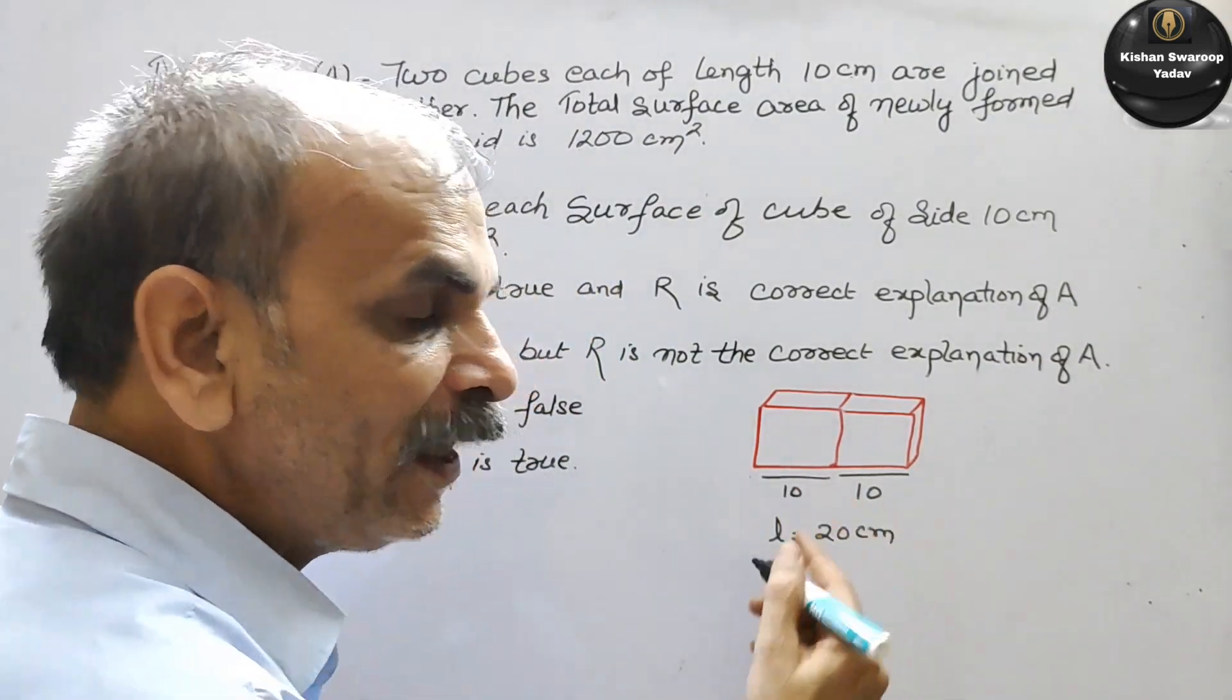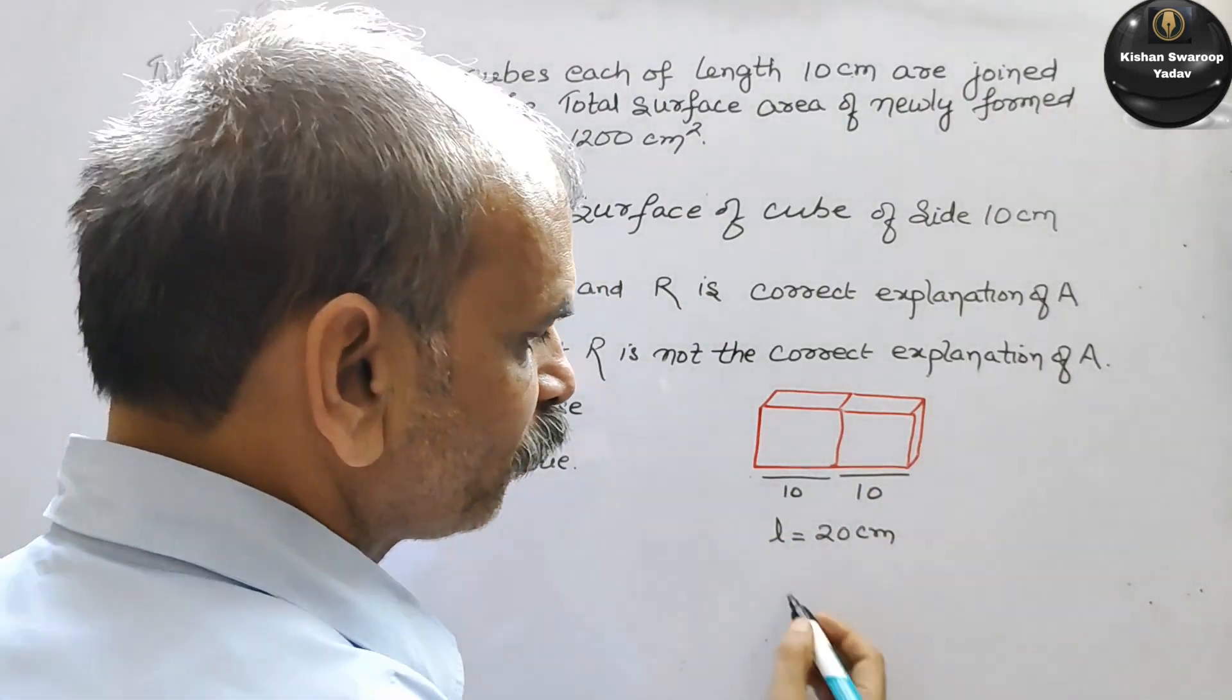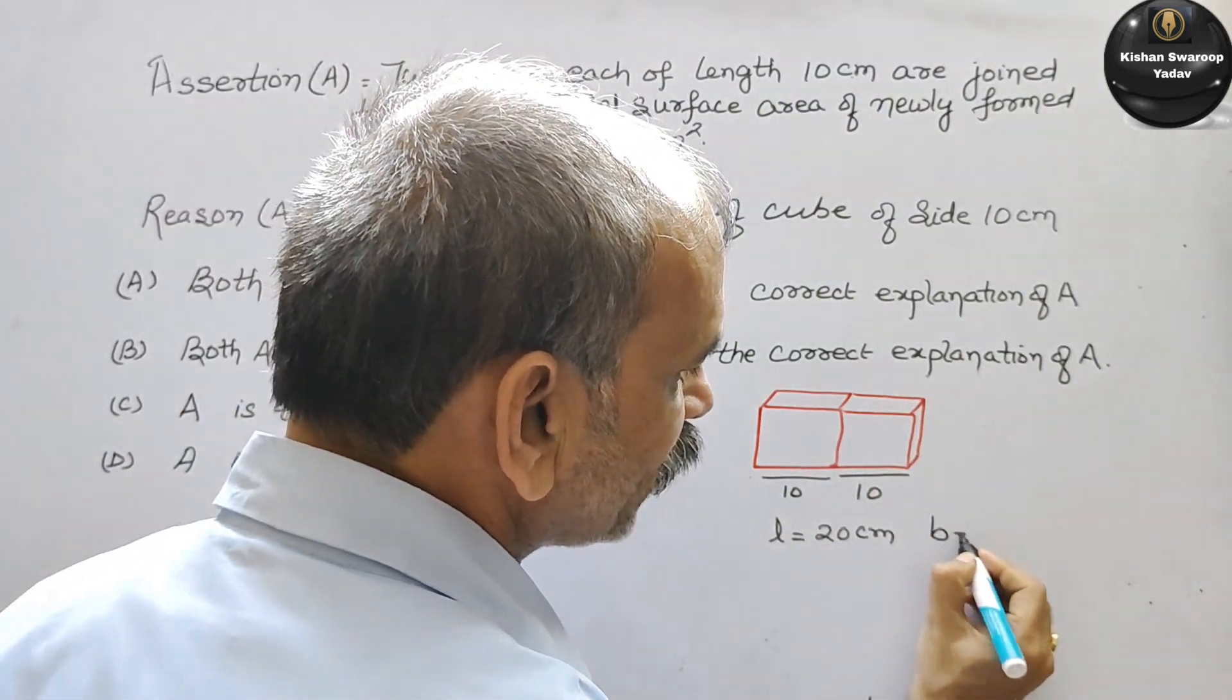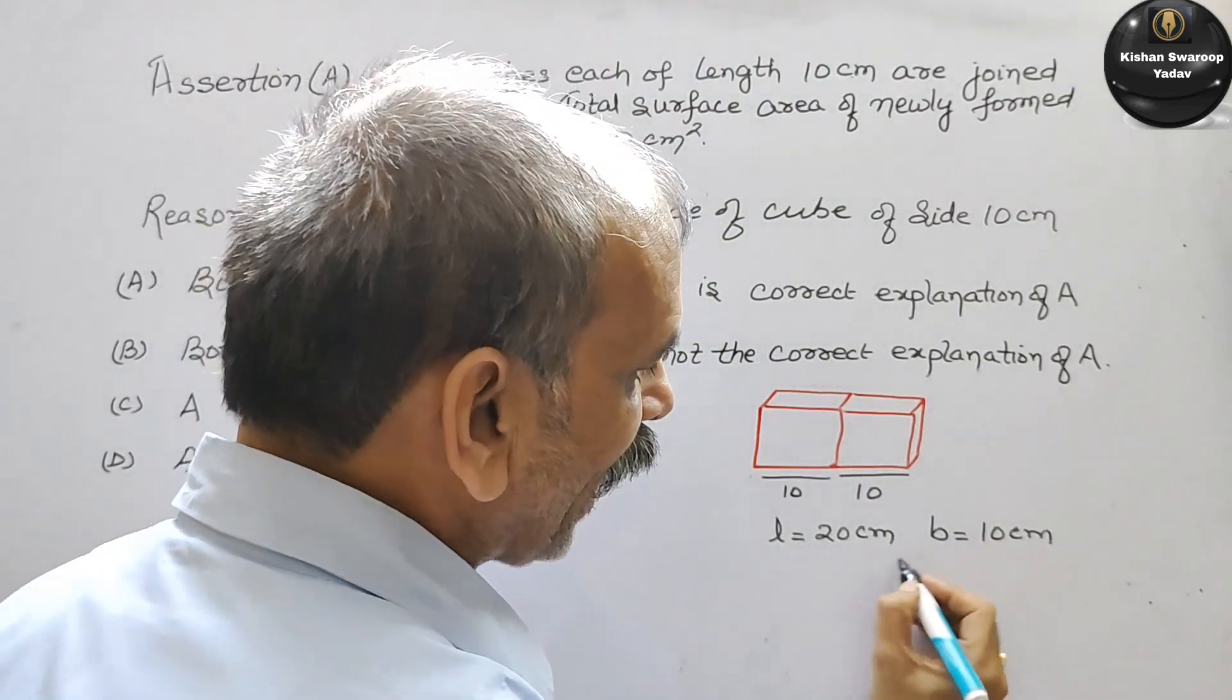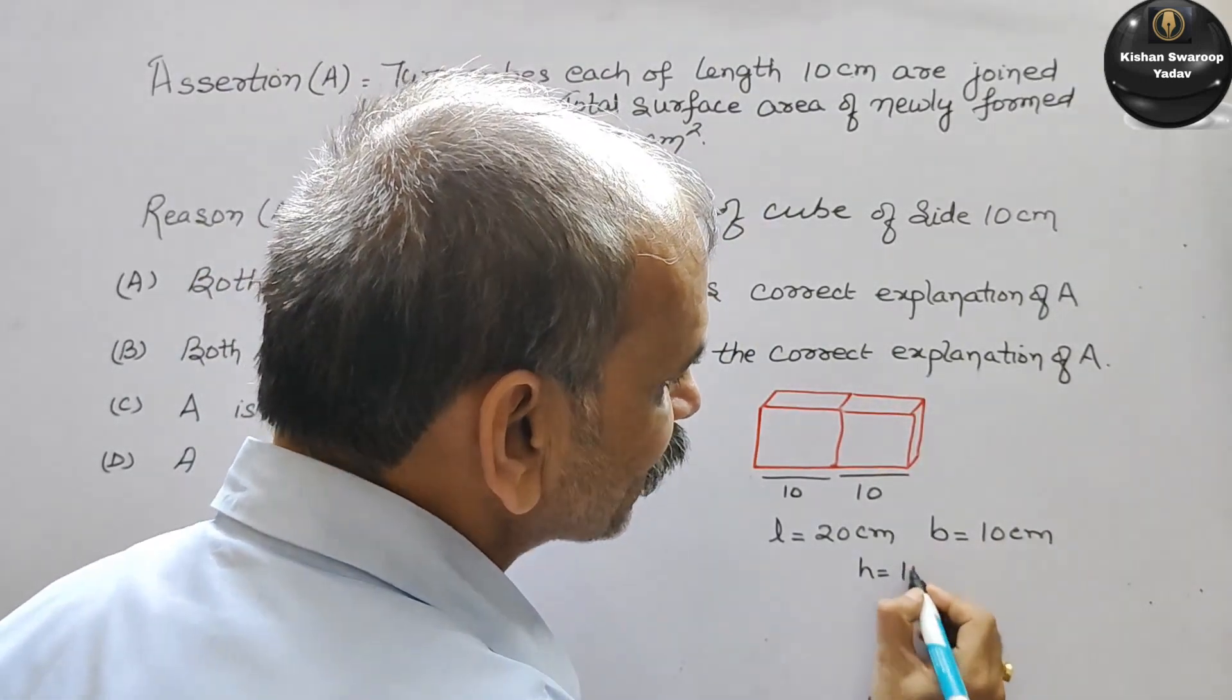And in a cube, every side is equal. So your breadth is 10 cm and height is also 10 cm.